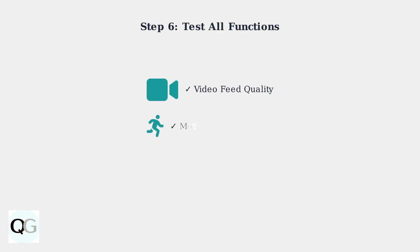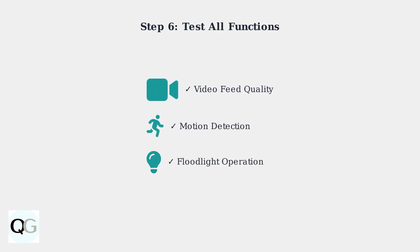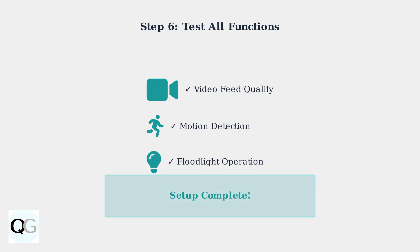Finally, test all functions to ensure proper operation. Verify the video feed is clear, motion detection is working correctly, and the floodlights activate as expected. Your Ring Floodlight Camera Pro is now successfully set up and ready to protect your home.